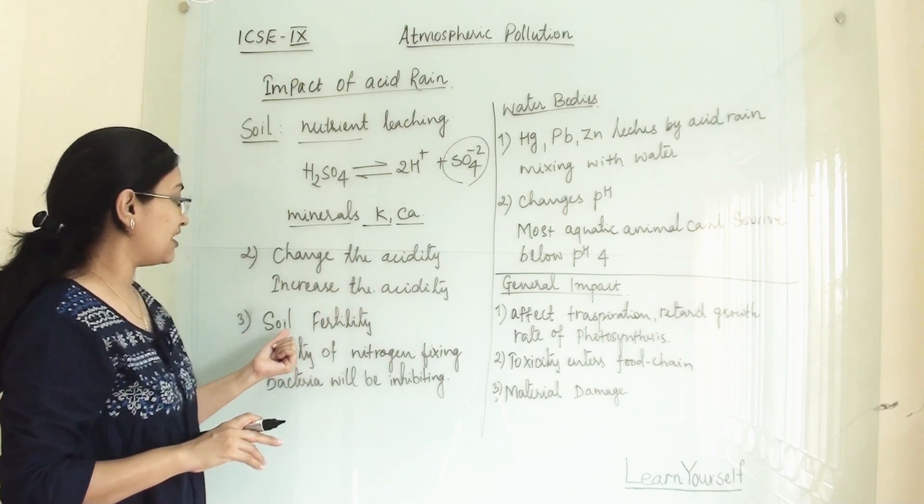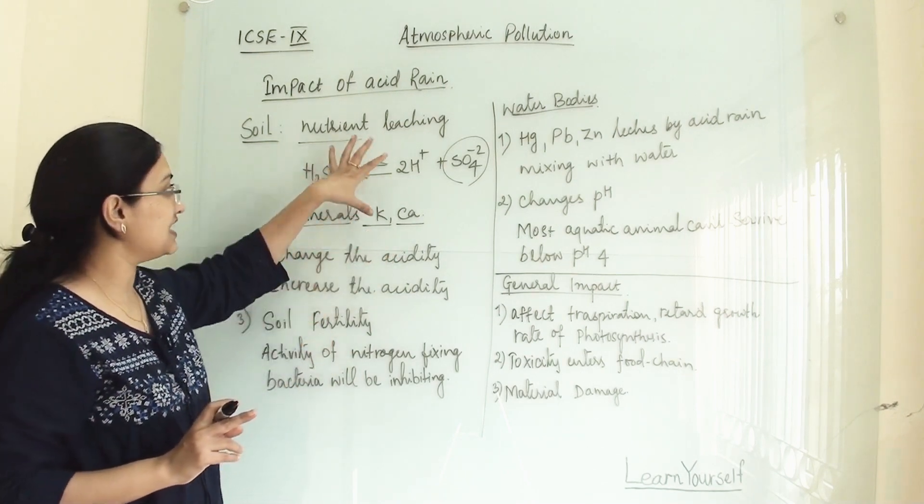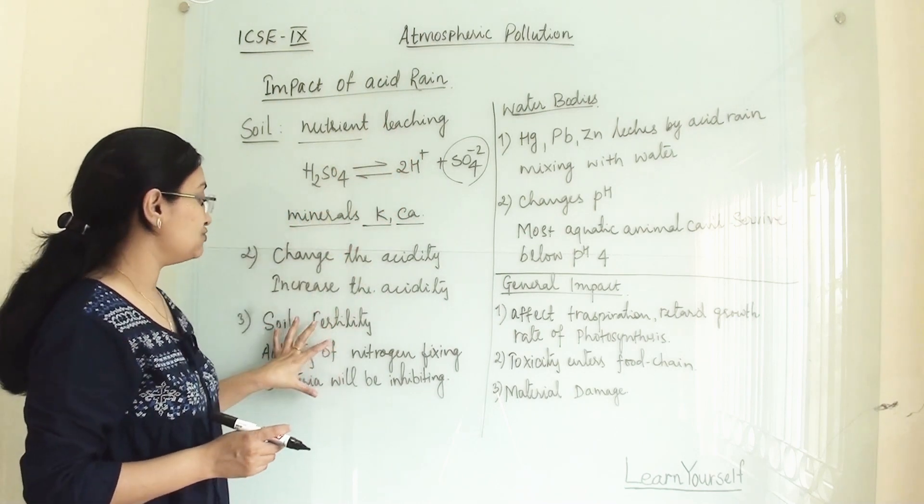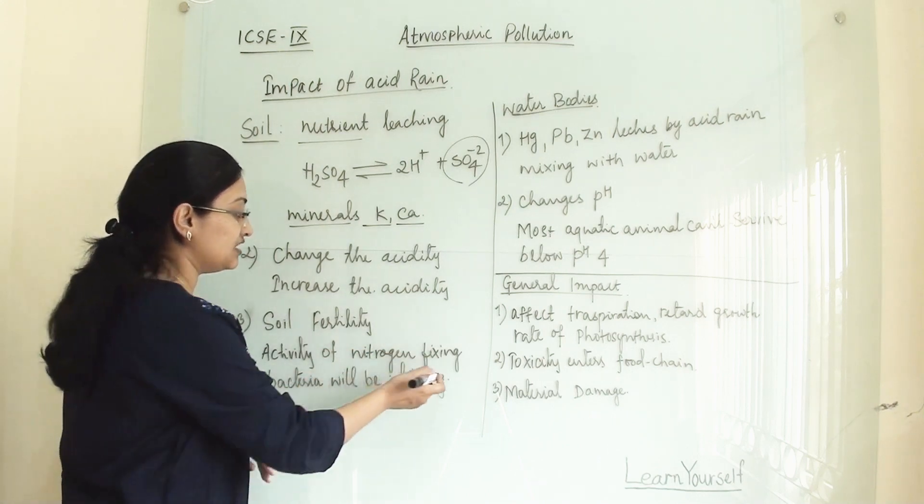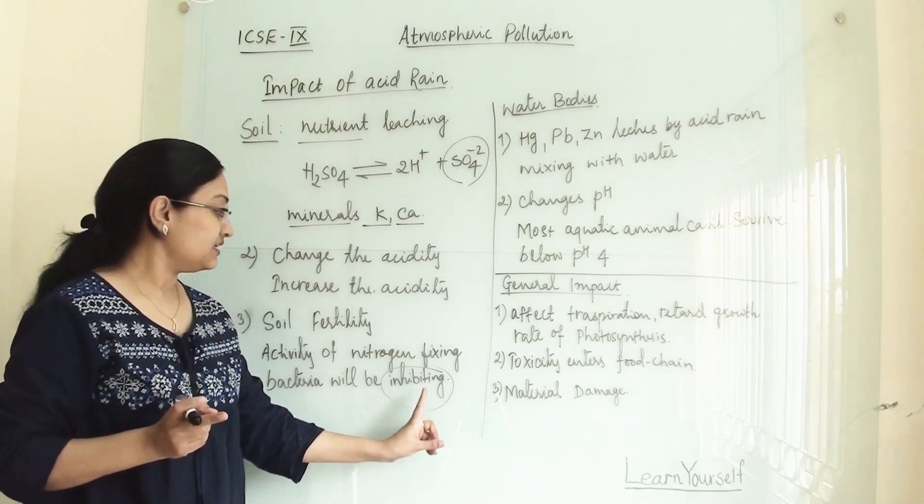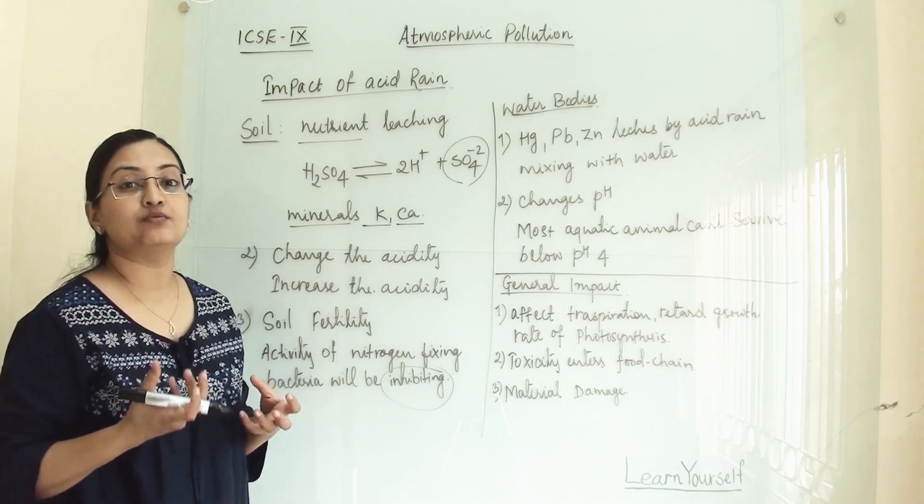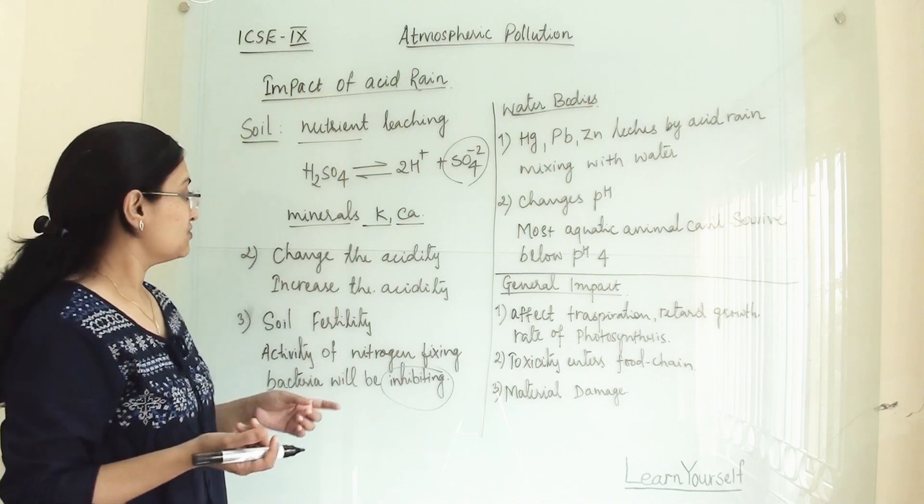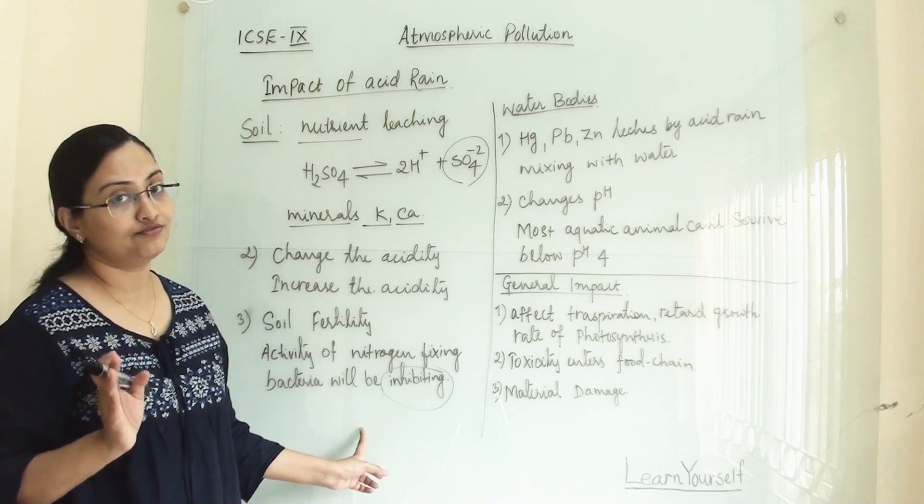Third is soil fertility. It is affecting the soil fertility because it is increasing acidity and in turn nutrient leaching will be happening. So it is reducing soil fertility and the activity of nitrogen fixing bacteria will be inhibiting. When the acidity increases, this will inhibit the activity of nitrogen fixing bacteria. They won't generate much nitrogen which is helpful for plant growth, causing large damage to soil fertility.